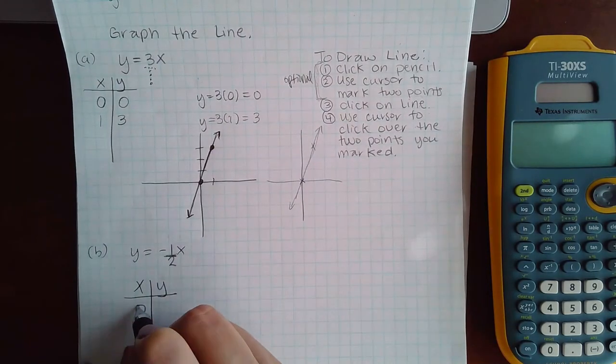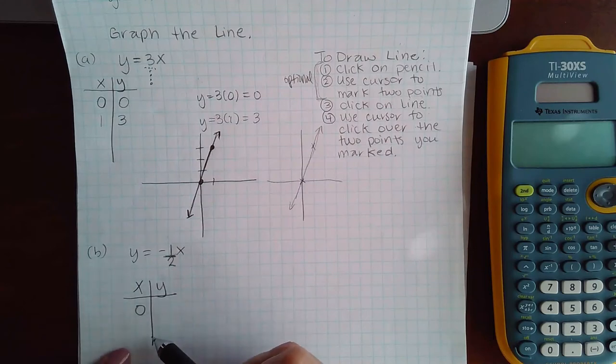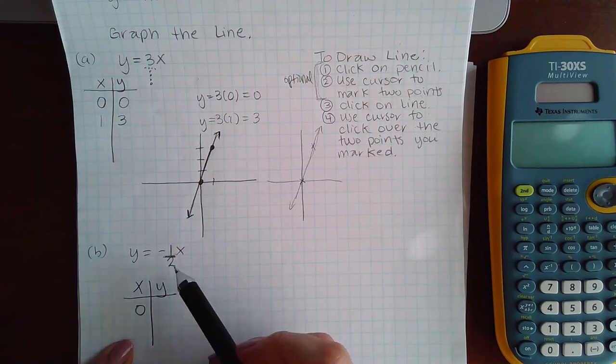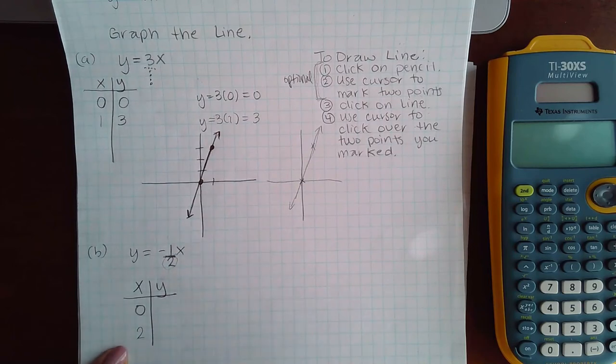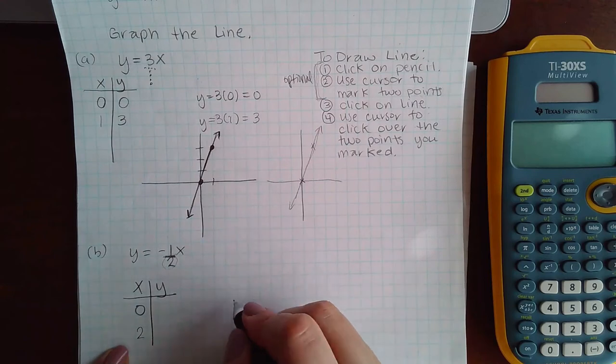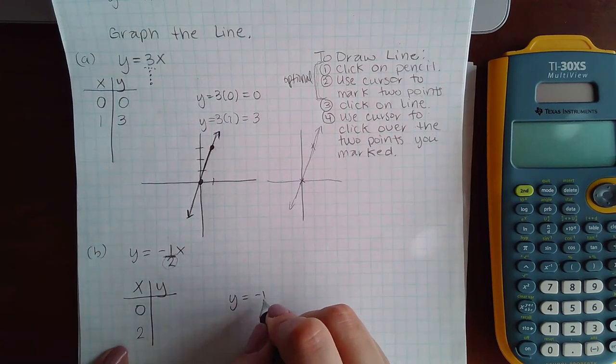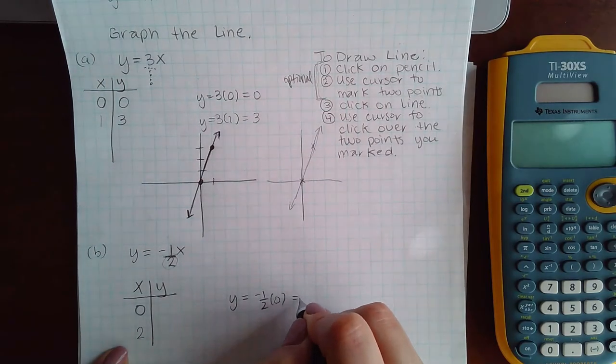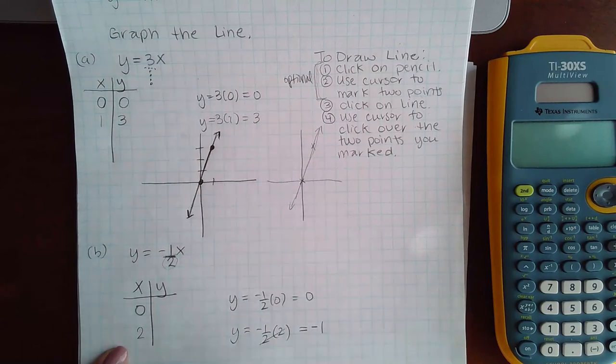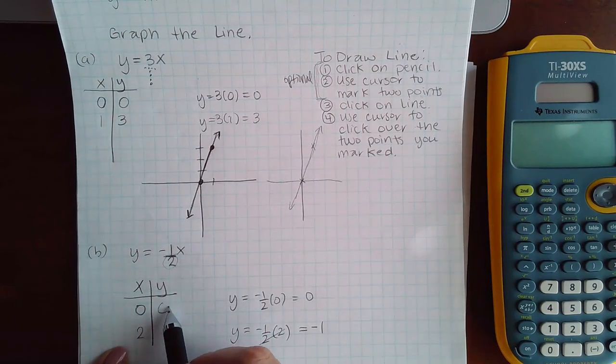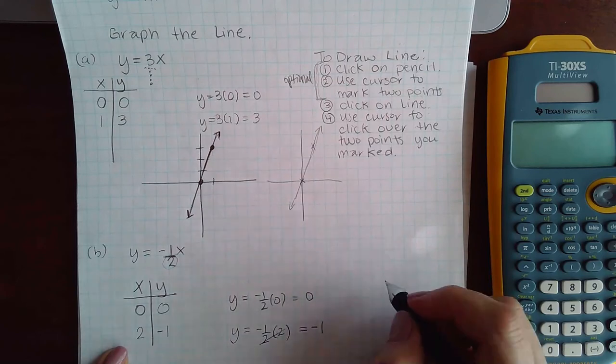And then what was the other one I like to plug in? My denominator. And this time I am given a denominator - it's two. So those are the two values that I'm going to plug in for x. So y equals negative one half times zero equals zero. Y equals negative one half times two will actually be negative one. So I get zero and negative one.